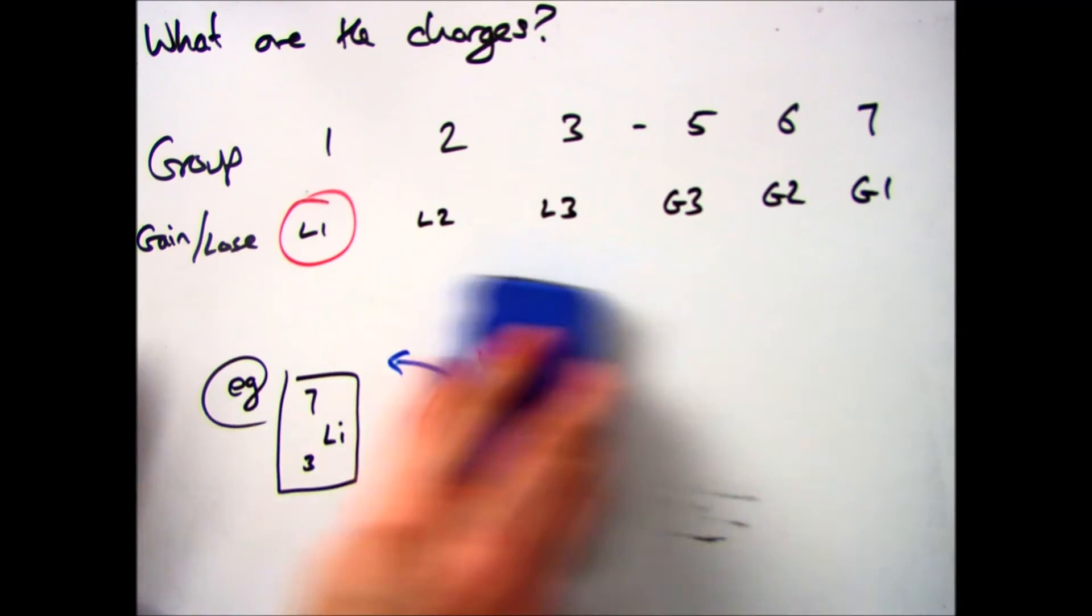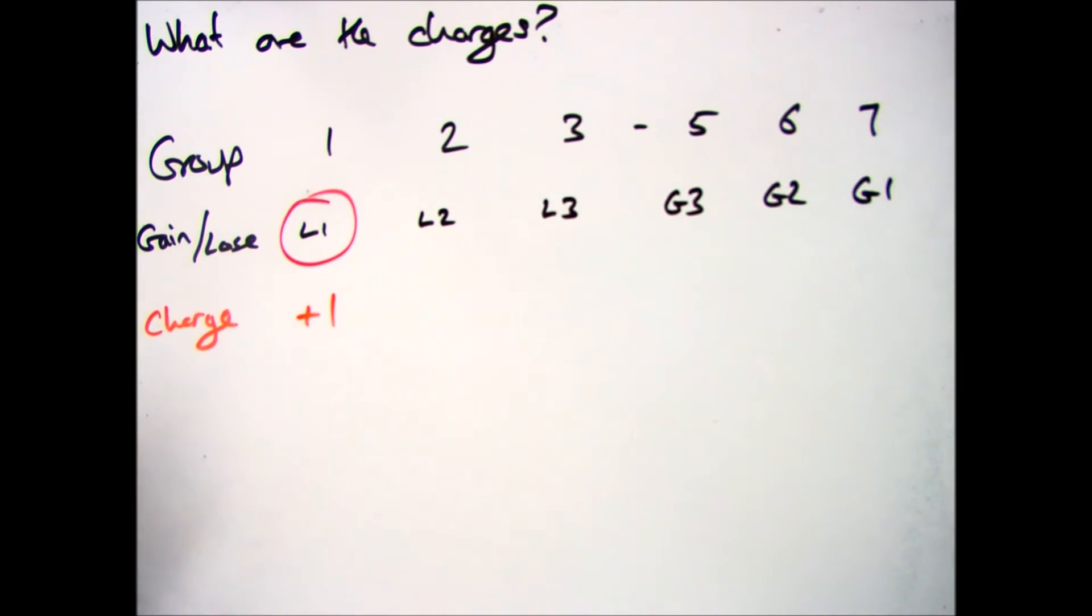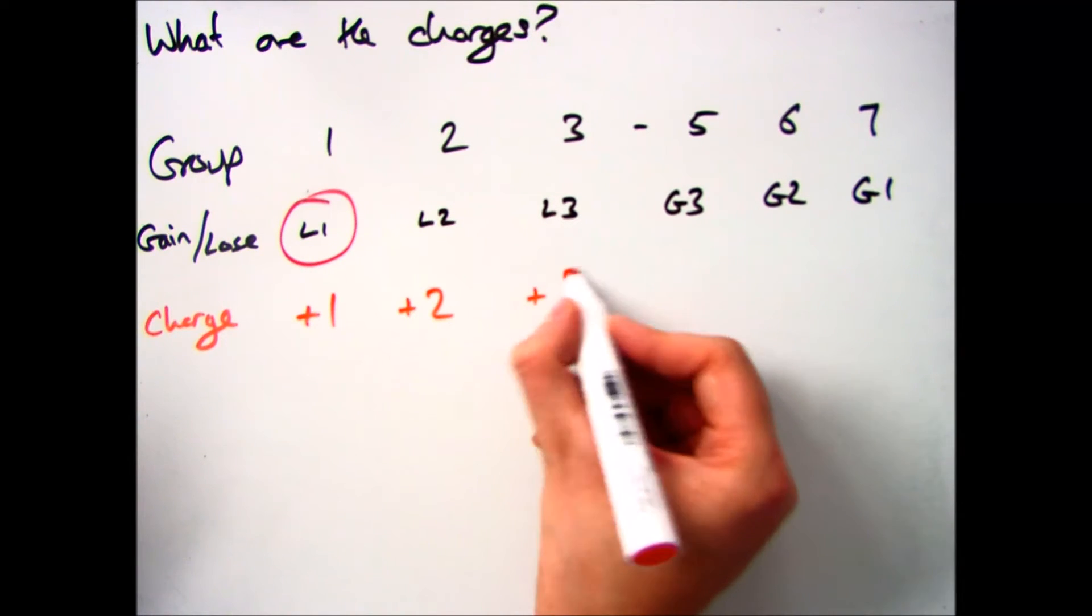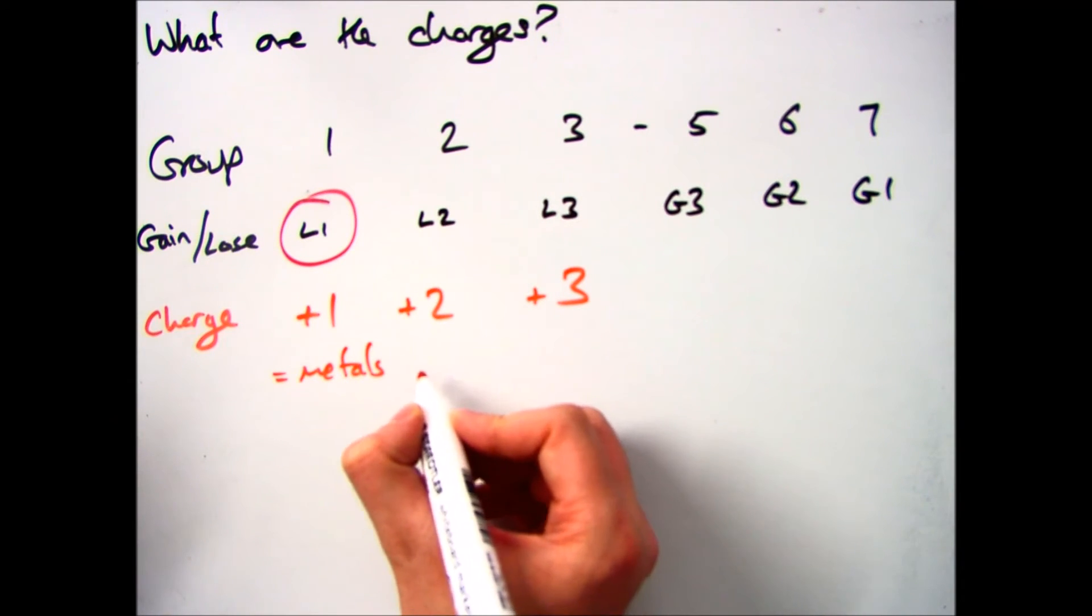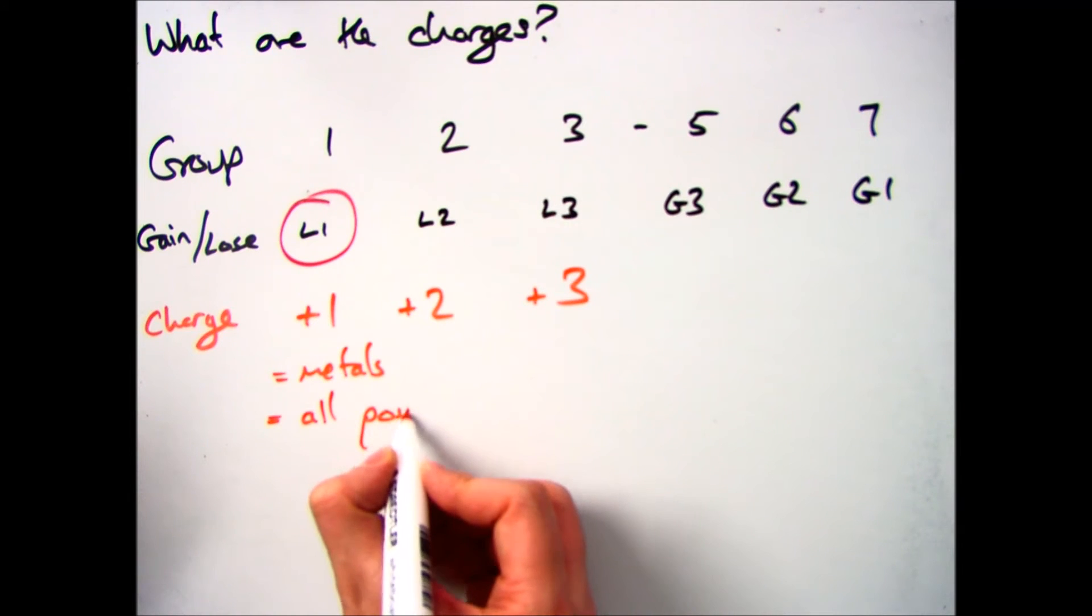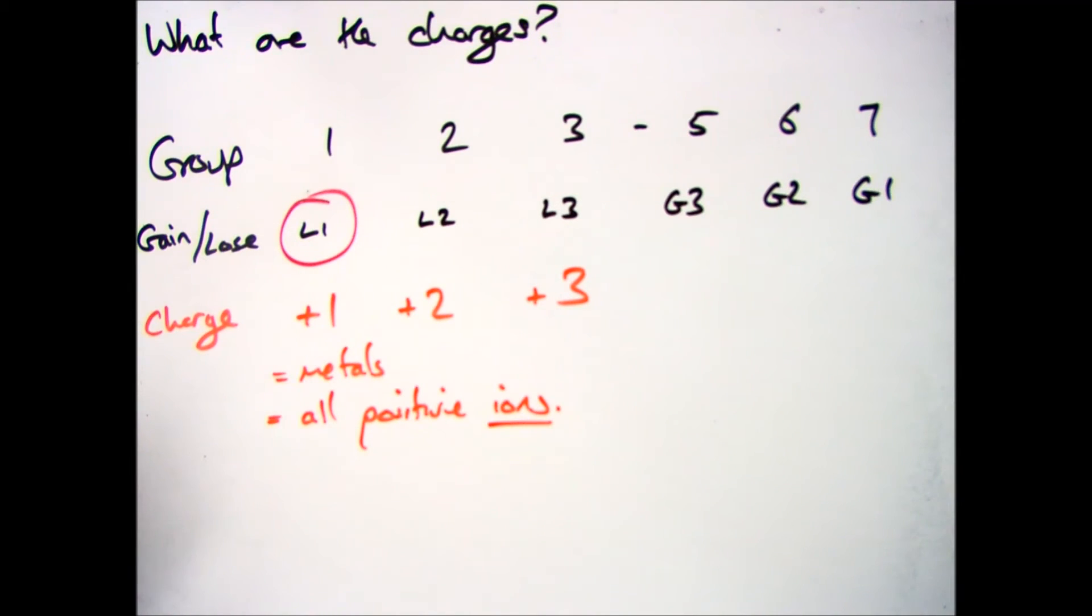Now this is a pattern that repeats for all metals, so group 1, group 2, and group 3. So if we look at the overall charges, group 1 will become +1, group 2 will become +2, and group 3 will become +3. And as I said, that is for all metals. They will lose electrons and become positively charged ions.